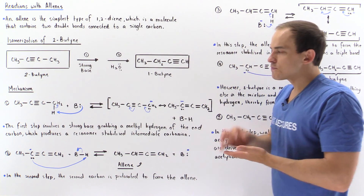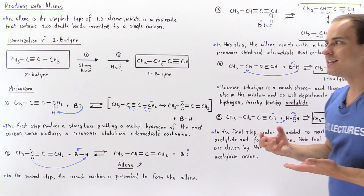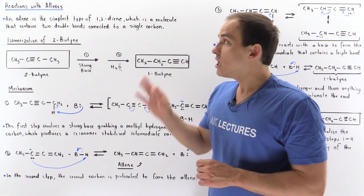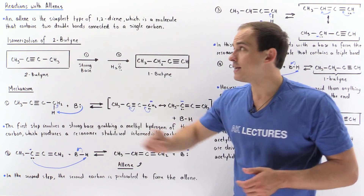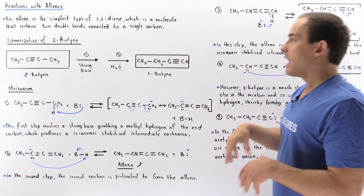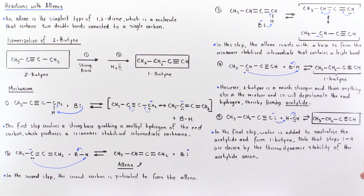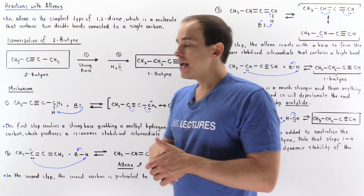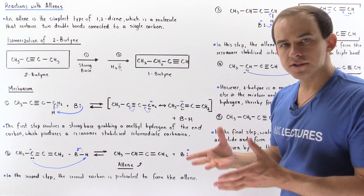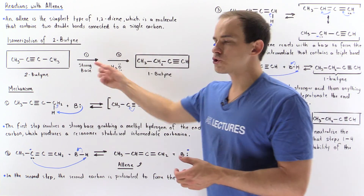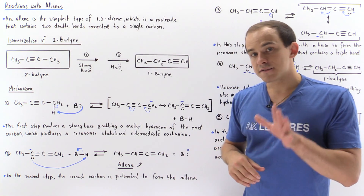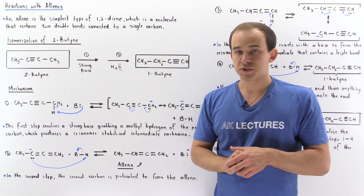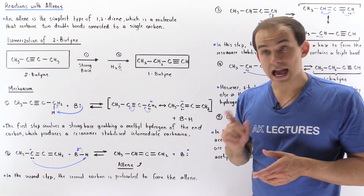The question is: what exactly is the mechanism by which this reaction takes place, and where is the 1,2-diene — where is the allene — actually found in our mechanism? Let's begin by examining the first step, the addition of a strong base. This first step actually involves four individual steps that we're going to examine right now.